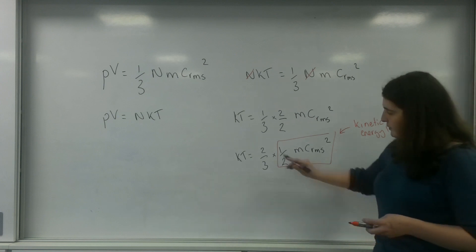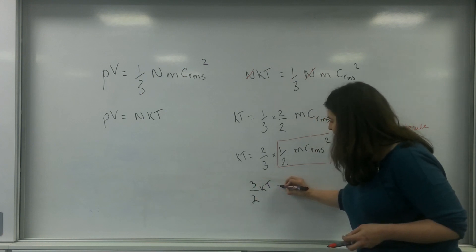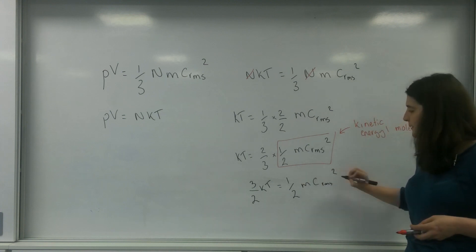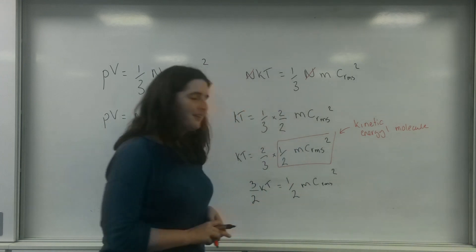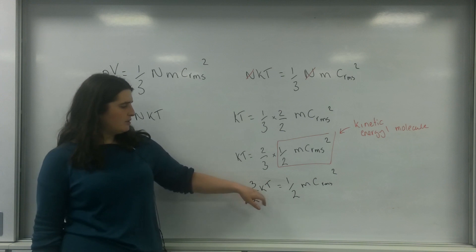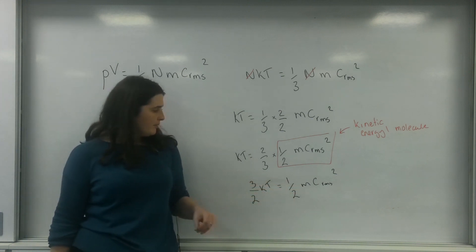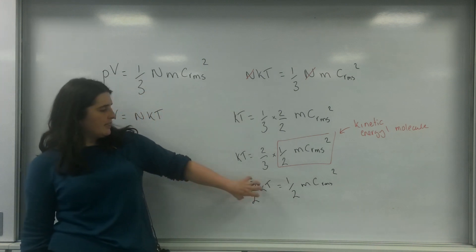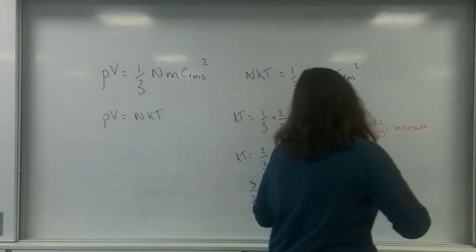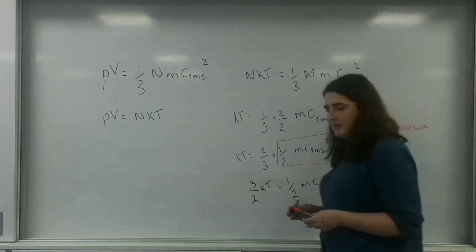So if I just move that to the other side, I end up with three-halves KT equals one-half MC_RMS squared. K is a constant, T is a constant, M is a constant — those are constants for the gas. So I can say that temperature T is directly proportional to the kinetic energy.